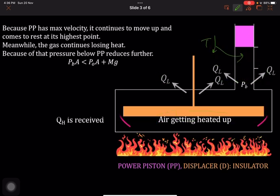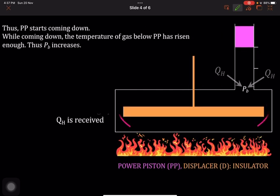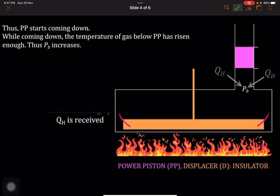The power piston comes down. While the power piston comes down, the hot air still keeps on moving up, and because of the mechanical arrangement, the displacer also moves down.